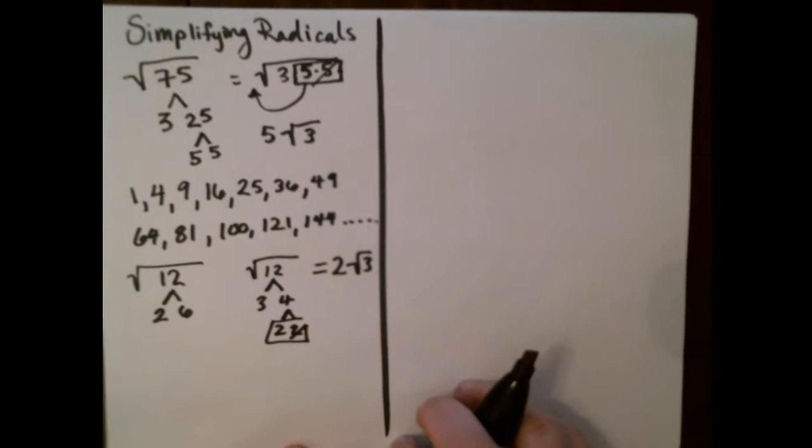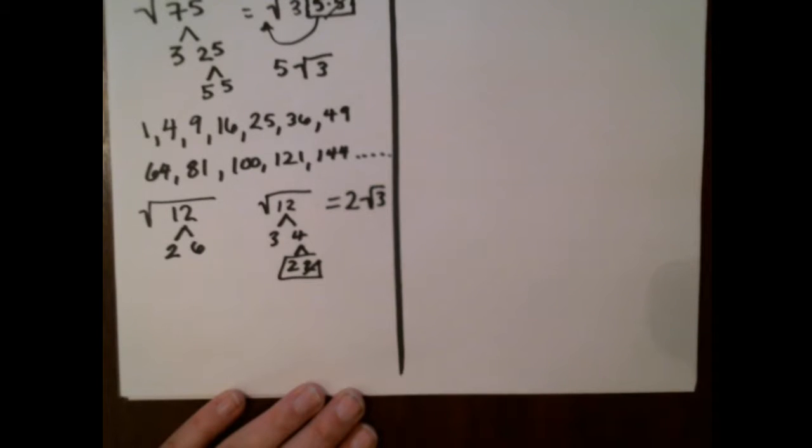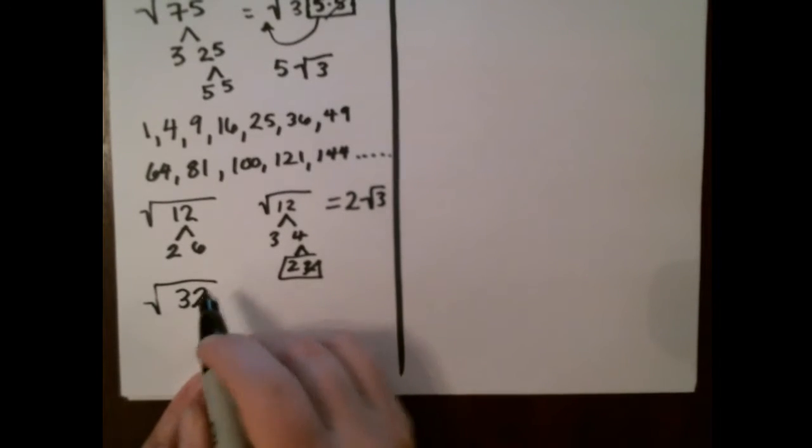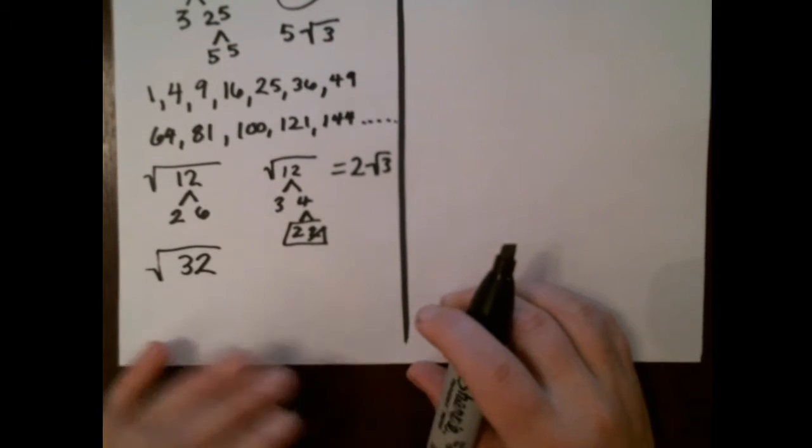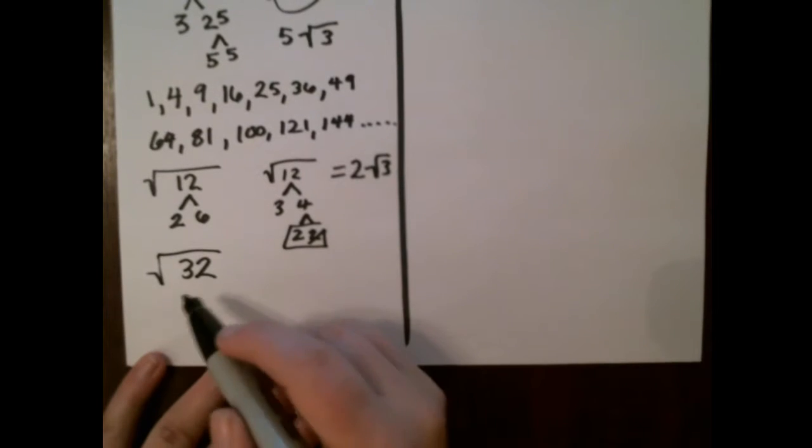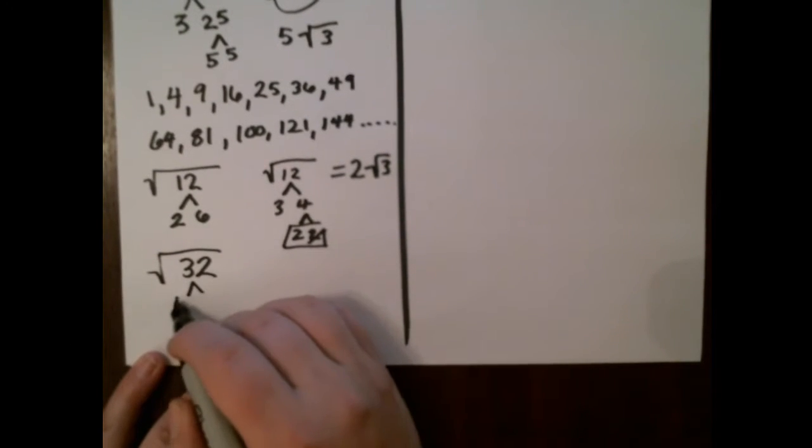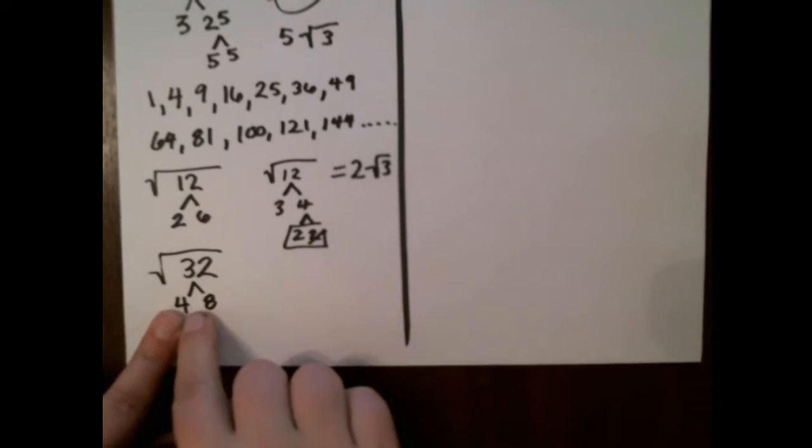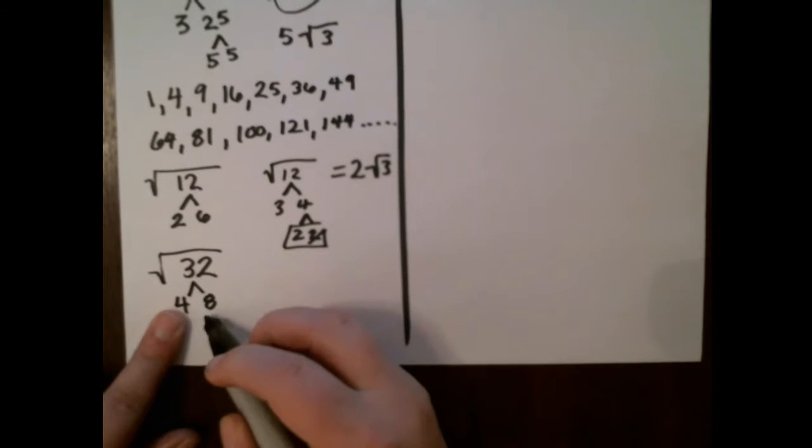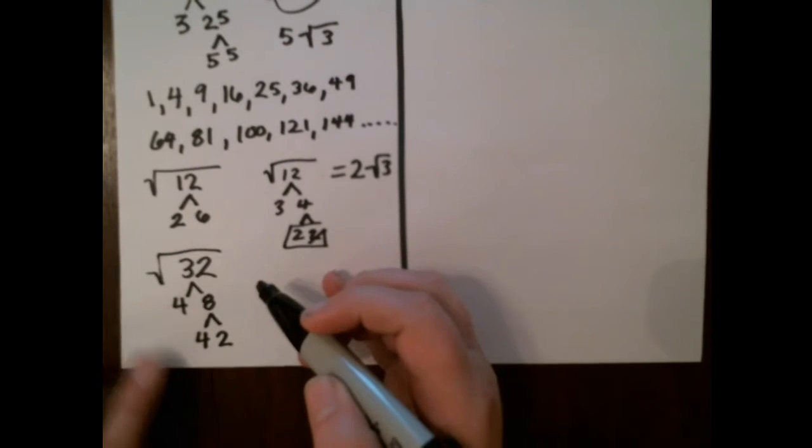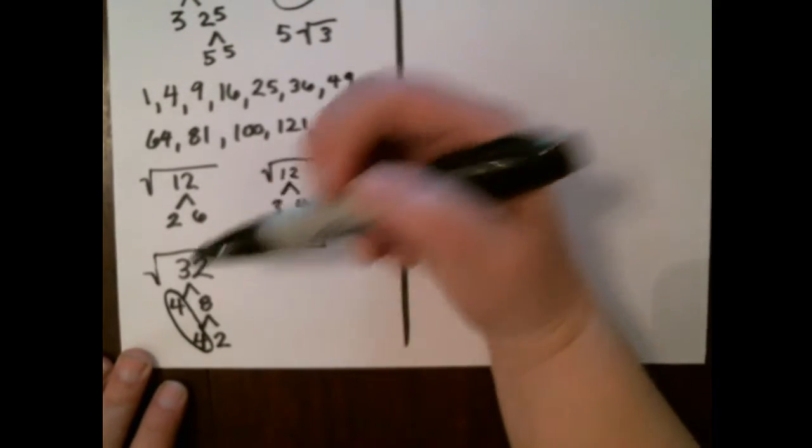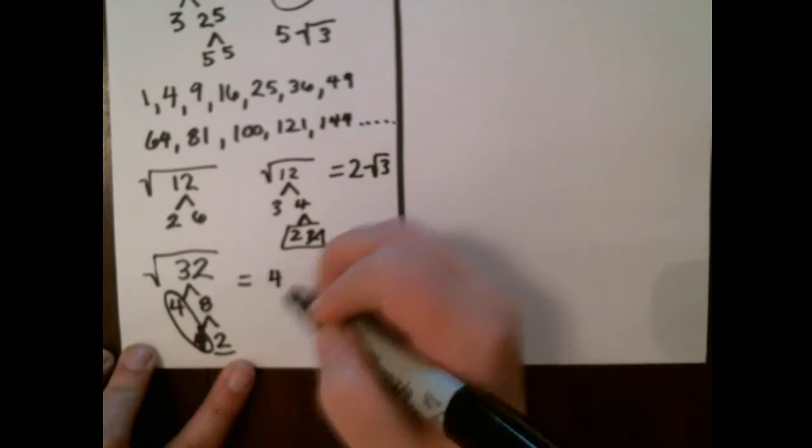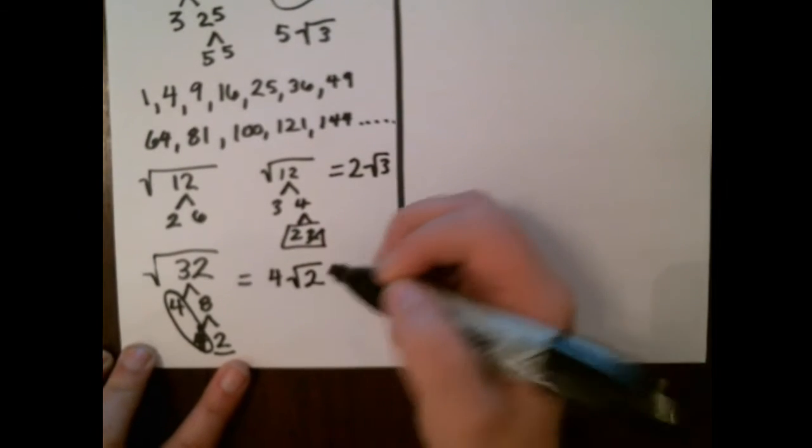Let's do a couple more really easy ones and then we'll move up to the ones with the variables that might be slightly intimidating to you. Square root of 32. So again, I could break this down in a couple of different ways. I'm going to pick 4 and 8. I picked 4 just because it's a perfect square. Also this is a multiplication fact you should know. I'm going to pick 4 and 2. Notice that I now have two 4s. Only one ever makes it out from any group and that 2 is left inside. And I'm done.